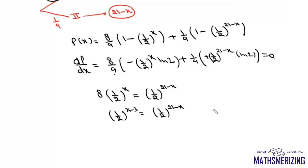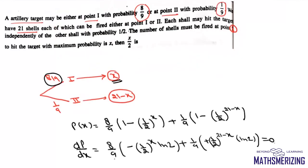Comparing exponents, we get 2x equals 24, so x equals 12. Out of 21 shells, 12 must be directed at 0.1 and 9 at 0.2 to maximize the probability of hitting the target. Since x equals 12, the value of x/2 is 6, which is the answer.